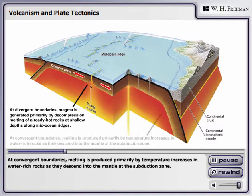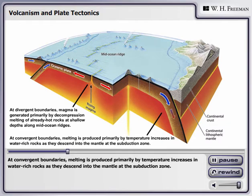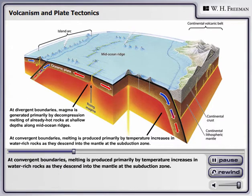At convergent boundaries, melting is produced primarily by temperature increases in water-rich rocks as they descend into the mantle at the subduction zone.